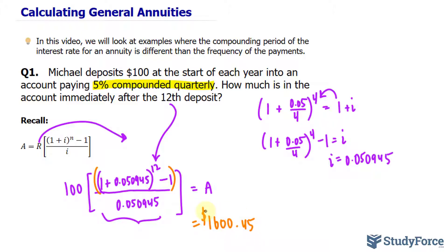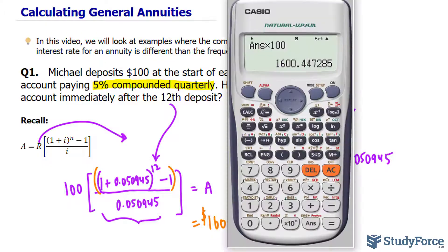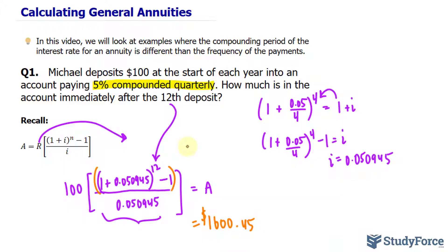Just out of curiosity, if I were to take 100 and multiply it by 12, I would get 1,200. Taking the difference of this and 1,200 gives you the amount that you wouldn't have earned otherwise without the interest being compounded. If I subtract 1,200 from this, that means we've earned a profit of $400.45 over the 12 years.